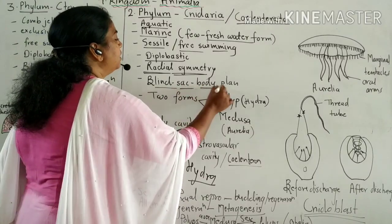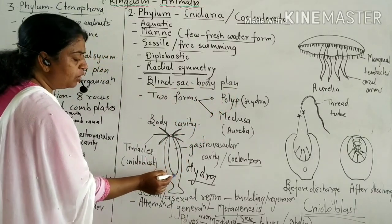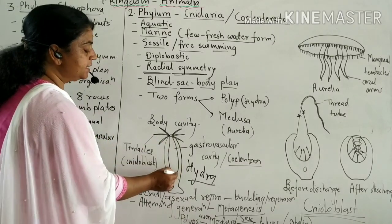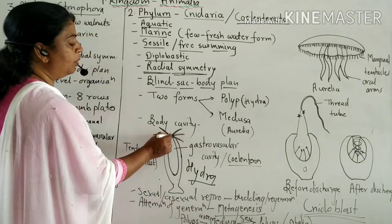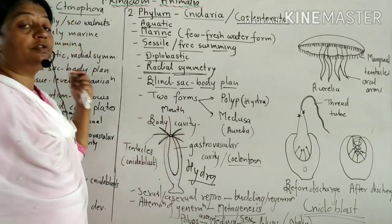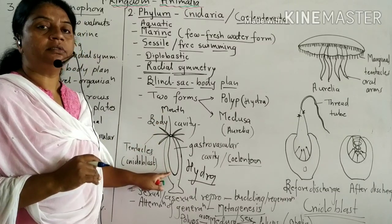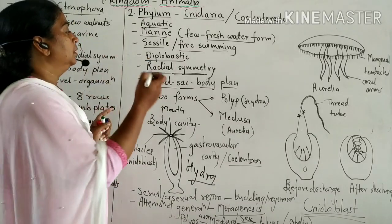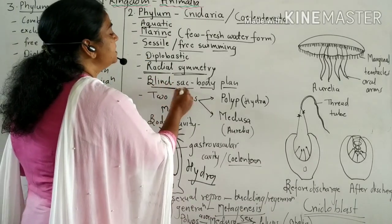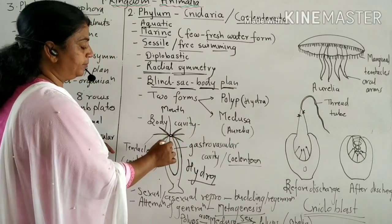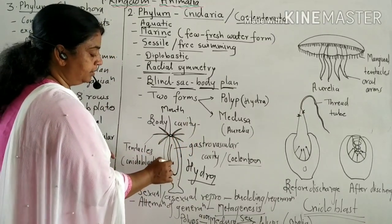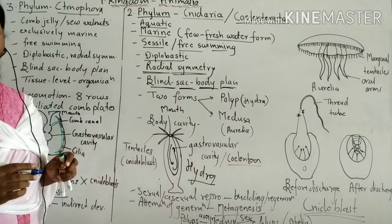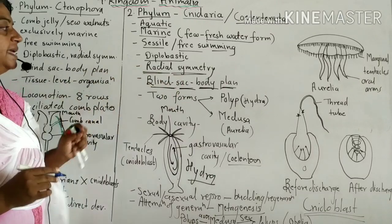They show a blind sac body plan. One end of the animal is blind, and only one end is open, called the mouth. From this mouth, food enters and undigested food is ejected. This is the blind sac body plan — only one opening for both food entry and egestion.